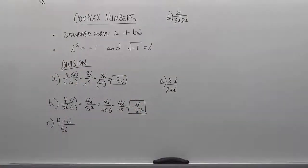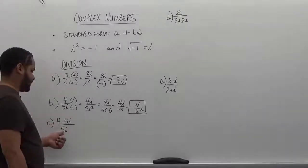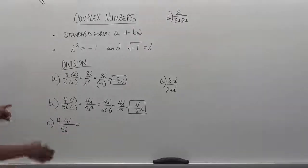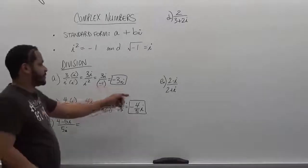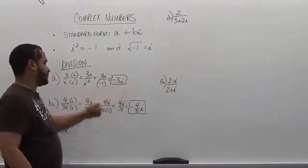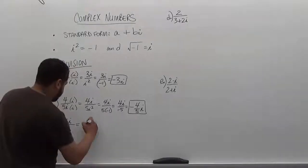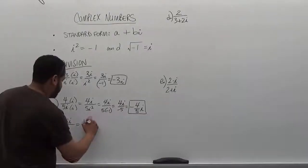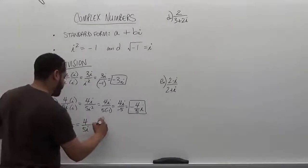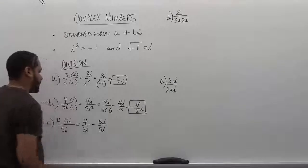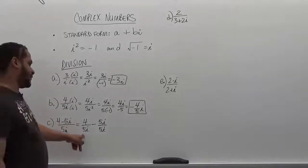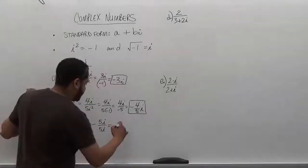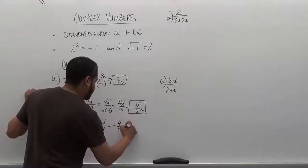Moving on to the next one, we have 4 minus 5i as the numerator divided by 5i. We want to get rid of the i in the denominator to rationalize and put our solution in standard form. Since we have a monomial on the bottom, we separate the fractions: 4 over 5i minus 5i over 5i. We've already done 4 divided by 5i — that became negative 4 over 5 i.